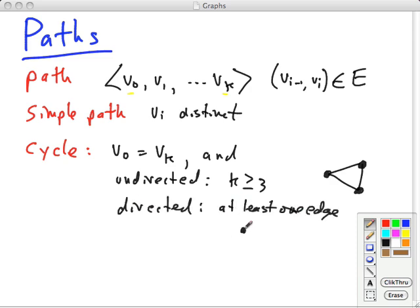But in a directed graph, we just have to say at least one edge. And this is because, in a directed graph, you can have self-loops. A simple cycle is when the v sub i are distinct. I should say more specifically, v1 to vk are distinct because v0 is equal to vk.